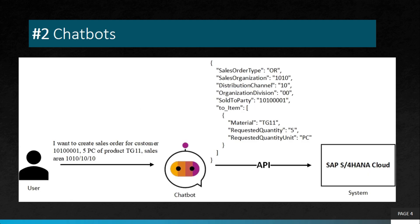The next project in our list is chatbot. SAP provides a chatbot called SAP Conversational AI. Chatbots are AI-powered virtual assistants that can provide customers with personalized service and support. SAP Conversational AI is a platform that allows businesses to create and deploy chatbots quickly and easily.